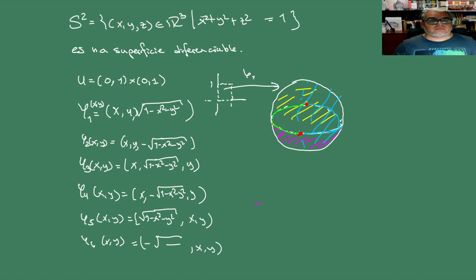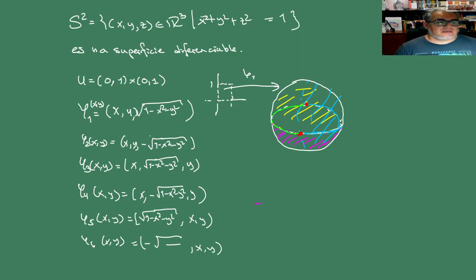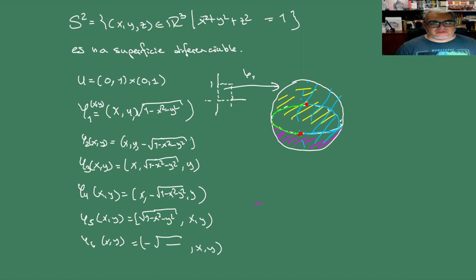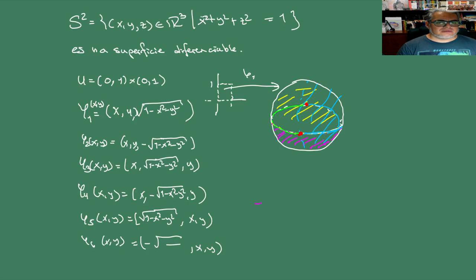¿Qué tendríamos que verificar? Primero, convencernos de que las φᵢ son diferenciables y que su diferencial es de rango maximal. Pero eso ya lo hicimos en el caso general porque estamos usando gráficas de funciones como coordenadas locales. Ahora el problema es que tenemos un traslape entre los abiertos en la esfera; por ejemplo entre los asociados a φ₁ y φ₃.